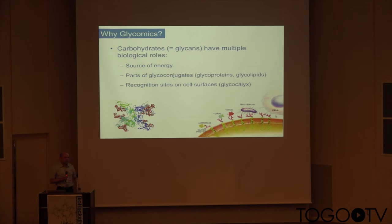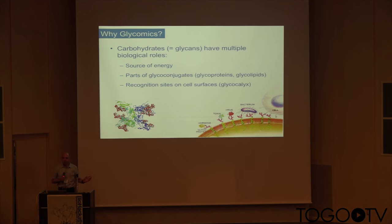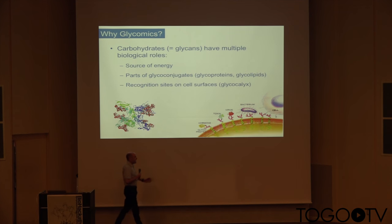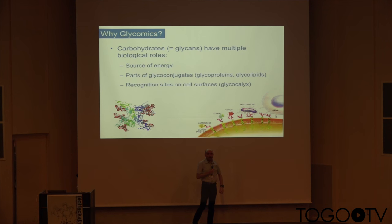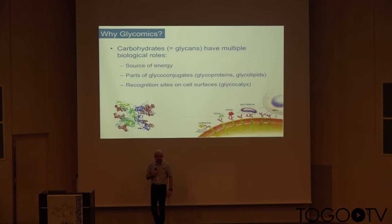Glycans can alter protein properties — not only switch on or switch off like phosphorylation, but fine-tune. You have multiple possible glycans that can be attached to a protein at a single site. Proteins and lipids can be entrapped in the cell surface from the glycoproteins — a layer of carbohydrates important for cell-cell interactions, also used by many pathogens to attach to and enter a cell.